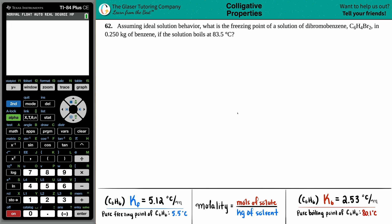Number 62. Assuming ideal solution behavior, what is the freezing point of a solution of dibromobenzene, which is C6H4Br2, in 0.250 kilograms of benzene if the solution boils at 83.5 degrees Celsius?